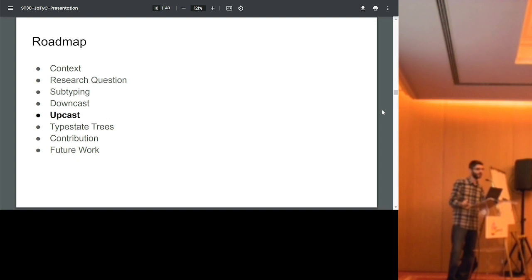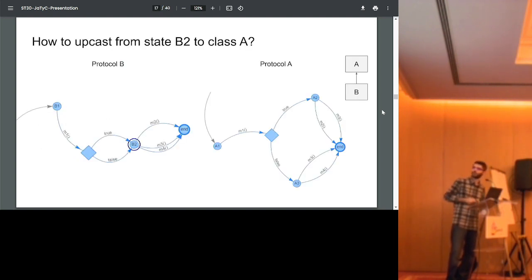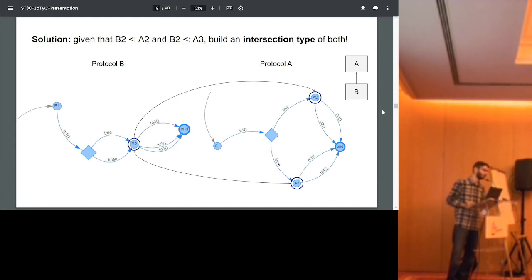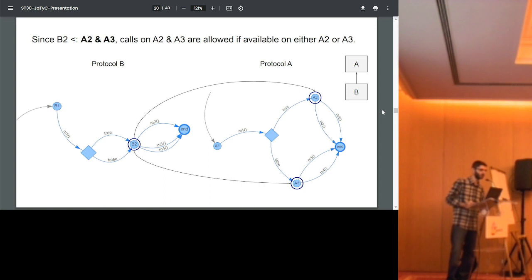Now to deal with upcast, we do something similar but in reverse. Again, classes B and A, B extending A, now different protocols. Let's consider we are on type state B2 and we want to upcast to A. So now we look for the super type states on A of B2. And again we find that there are two of them, A2 and A3. What do we do? Well, we could also produce a union, but we can actually be more precise and we will compose these two states in an intersection type. So we produce an intersection of A2 and A3. And any call that is available on either of them would be allowed. So on the intersection A2, A3, we could call M3, M4, M2, which also makes sense because in this example B2 precisely allowed these method calls.